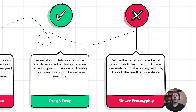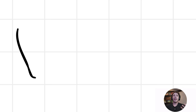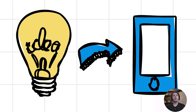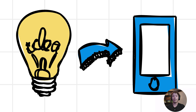Tools like Base44 and Claude Code can create prototypes much quicker than Flutter Flow, because they have AI doing everything in the background, and you can't beat that. Flutter Flow takes a little more time to go from idea to actual functioning app. In my experience, you can prototype a simple app in about a day, and a more complex, completed app in about two to three weeks.